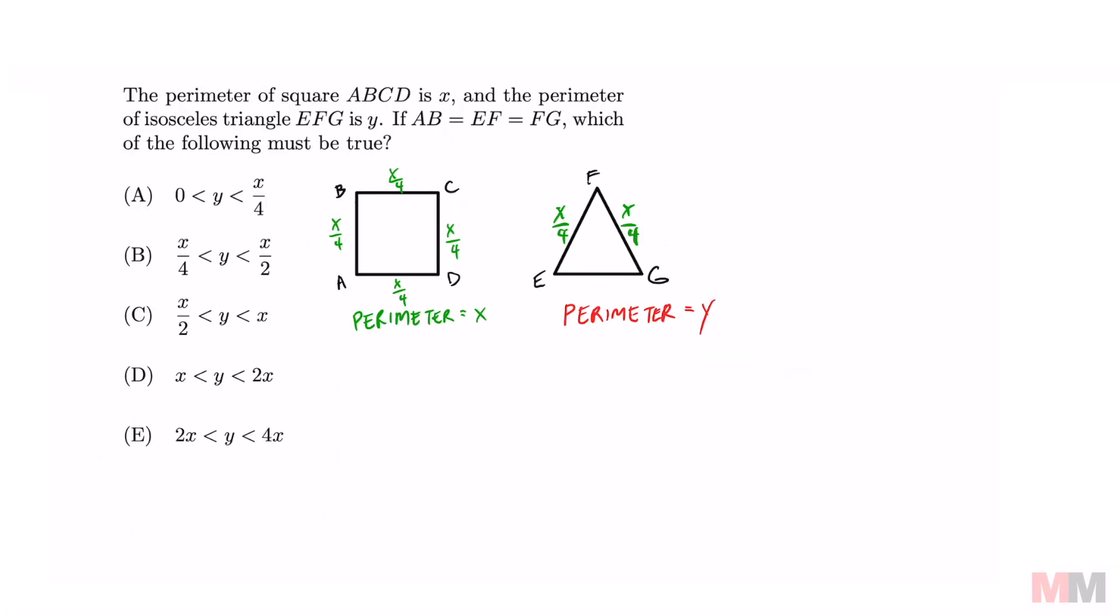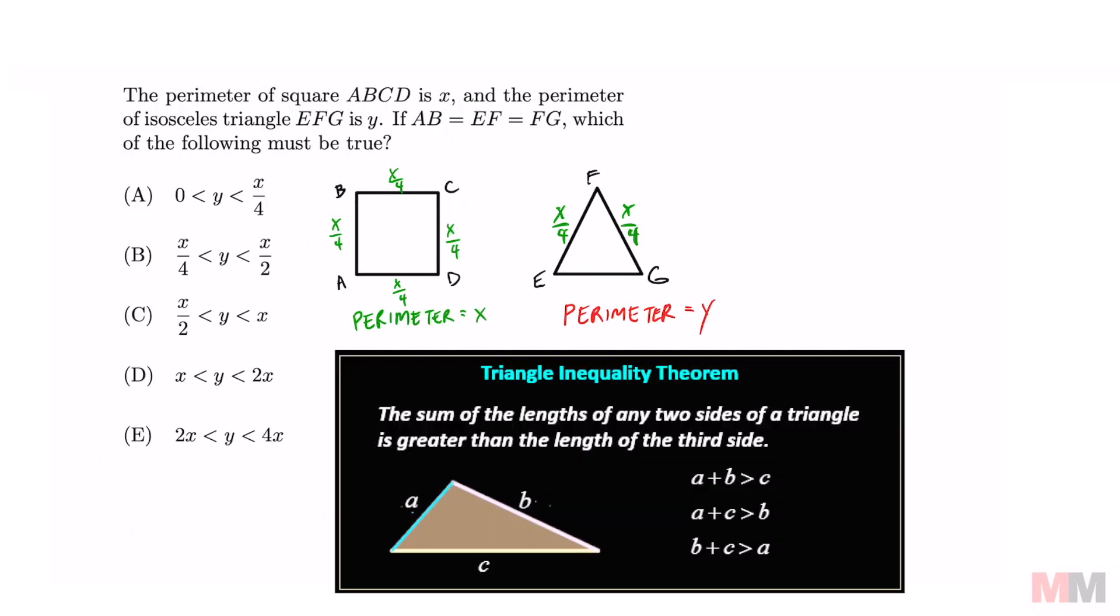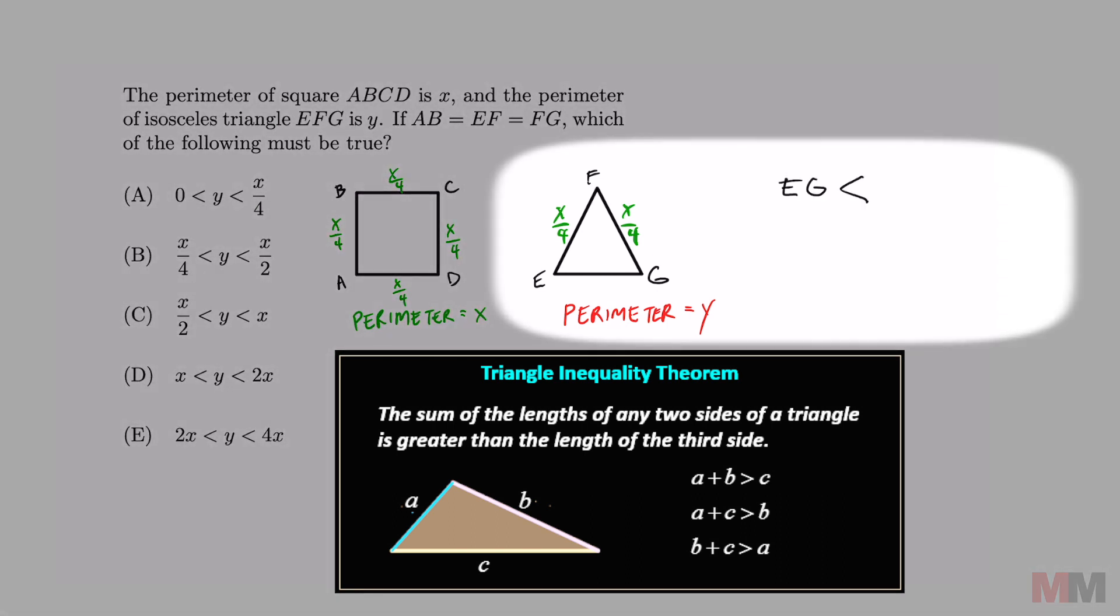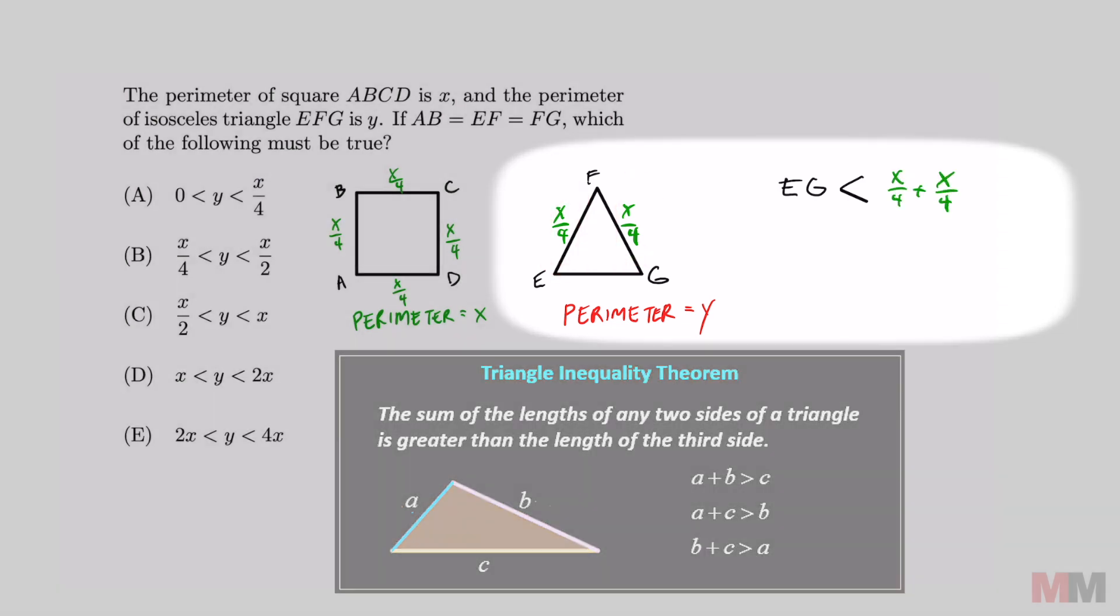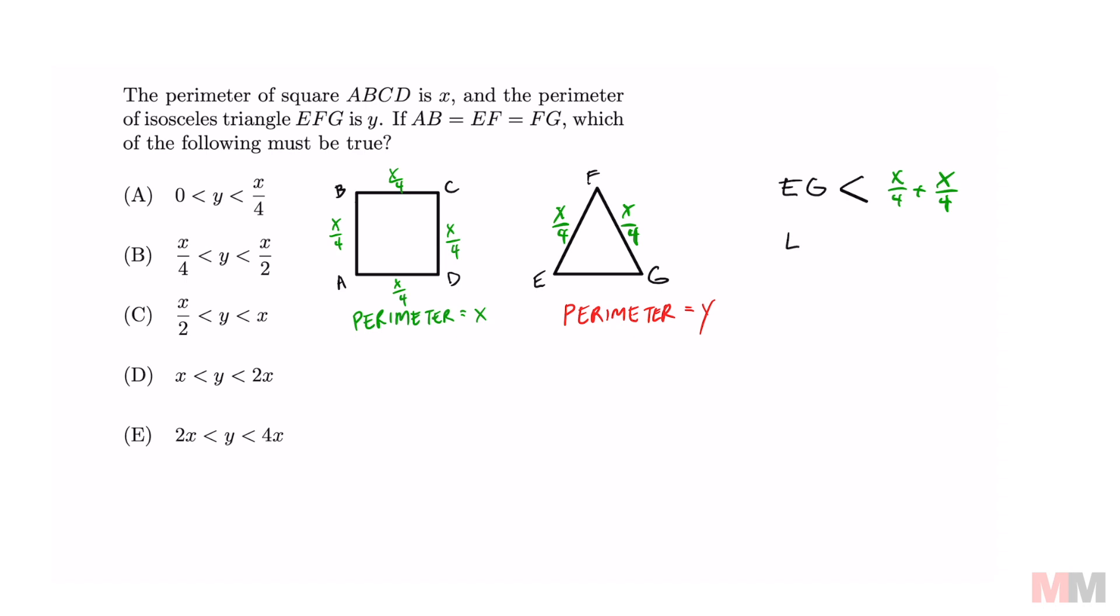This question is really testing you on the triangle inequality theorem and that is going to state that the length of EG has to be less than the sum of the two sides, which is X over 4 plus X over 4. Simplifying that, we get that EG has to be less than X over 2. But the length of EG has to be more than 0 since we're dealing with length.